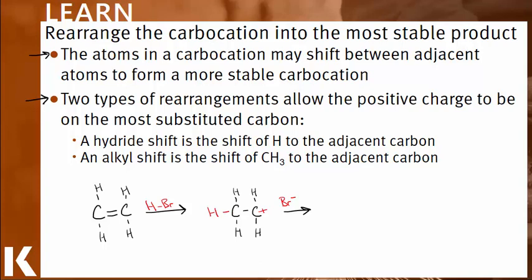There are two types of rearrangements that allow the positive charge to be on the most substituted carbon. One is a hydride shift. This is a shift of hydrogen to the adjacent carbon. Two is an alkyl shift. An alkyl shift is the shift of CH3, or methyl, to the adjacent carbon.